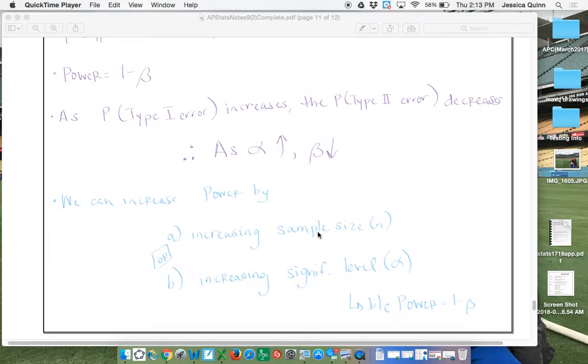And there's essentially two ways to increase the power. You can increase the power of a test by getting a larger sample size, so a larger N. And you can also increase the power by increasing your significance level, which is alpha.